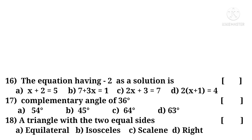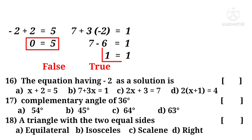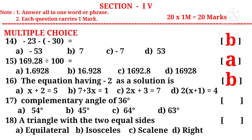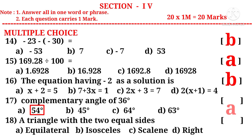Question 16: The equation having minus 2 as a solution — substituting minus 2 in the first equation: minus 2 plus 2 equals 0, but 0 equals 5 is wrong. In the second equation: 7 plus 3(minus 2) equals 1, that is 7 minus 6 equals 1, so 1 equals 1 is true. The correct choice is B. Question 17: Complementary angles sum to 90 degrees, so the complementary angle of 36 degrees is 90 minus 36 equals 54 degrees. Correct choice is A.